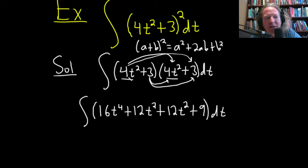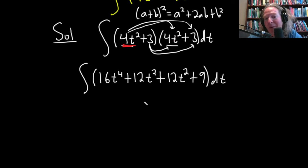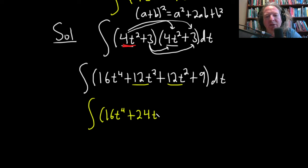So basically you take this number here, it's a different color, this expression here, 4t squared, and you multiply it by both of these. And take this term here and multiply by both of these. All right, looks like we can combine some like terms. So let's do that. So this is going to be the integral of 16t to the fourth. And then we have 12t squared plus 12t squared. That's going to be 24t squared, right?